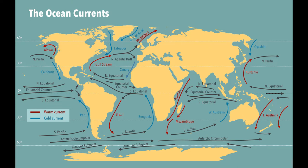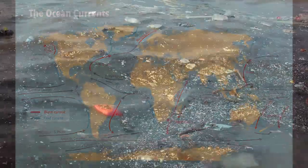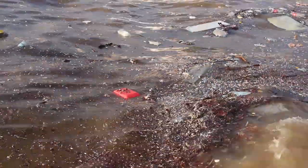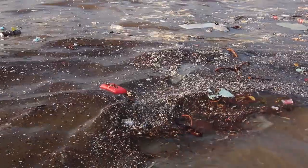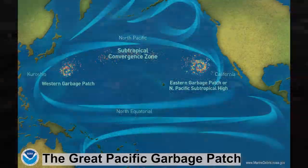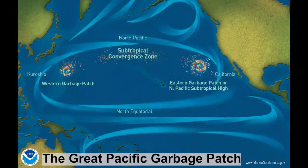Major ocean currents move in circular patterns called gyres, due in part to the same Coriolis effect. These ocean gyres transport water, nutrients, and also floating debris in the ocean. Because they move in a circular pattern, gyres can act as an accumulation zone for buoyant plastic that enters the ocean from the land.